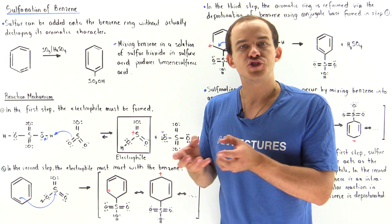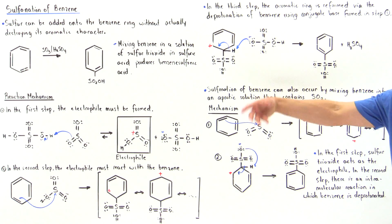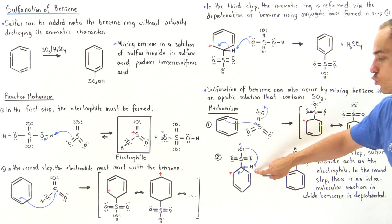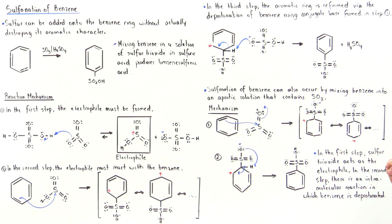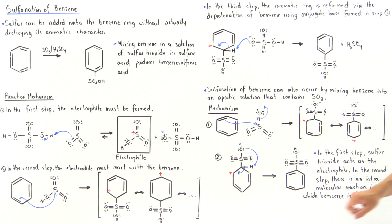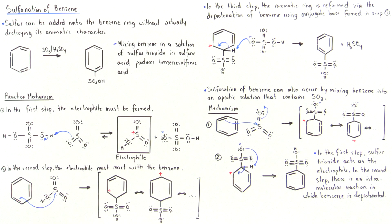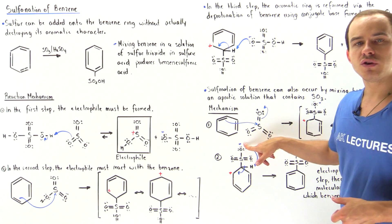An intramolecular deprotonation reaction takes place. Because the oxygen has a negative charge and a lone pair of electrons, it can grab the H atom when it approaches, reforming the aromatic ring. This pair of electrons forms a pi bond between these two carbons, producing benzene sulfonic acid and reforming the aromatic benzene molecule. In this reaction, sulfur trioxide acts as the electrophile in the first step, and in the second step there is an intramolecular, internal reaction in which benzene is deprotonated and the H atom is attached onto the oxygen.